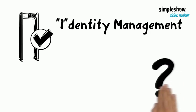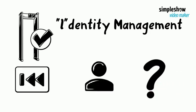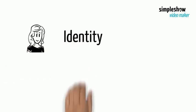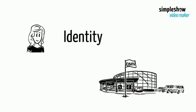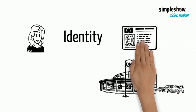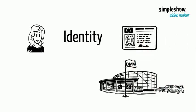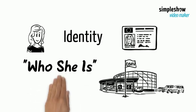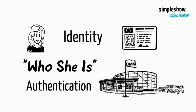Identity management is all about who you are. Katie herself is considered as an identity. Katie's identity provider, IDP, is the Department of Motor Vehicles, DMV. The DMV has Katie's personal information on file and issues her a driver's license — a certificate of identity. At the security gate, Katie needs to prove who she is, so she shows her driver's license to TSA staff. That is the authentication process.